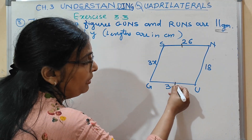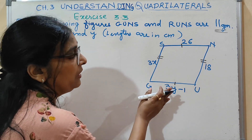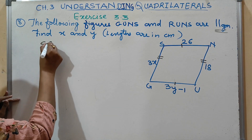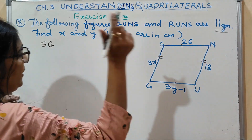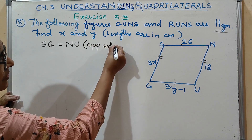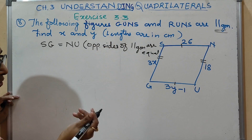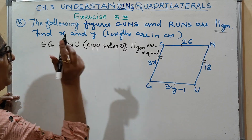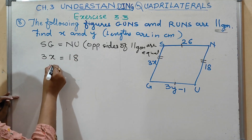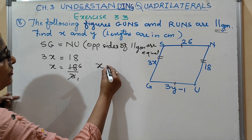This side is equal to this side, and this side is equal to this side. So we will use this property. I will write: opposite sides of a parallelogram are equal. That means you get X is equal to 6.